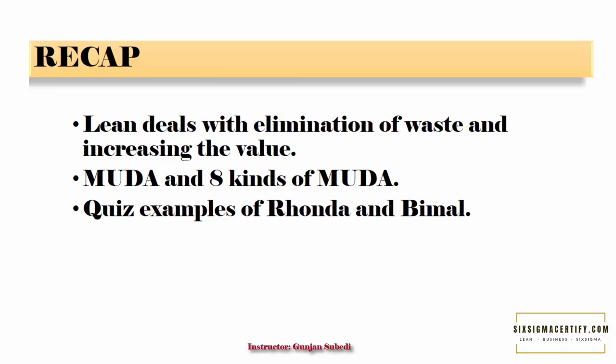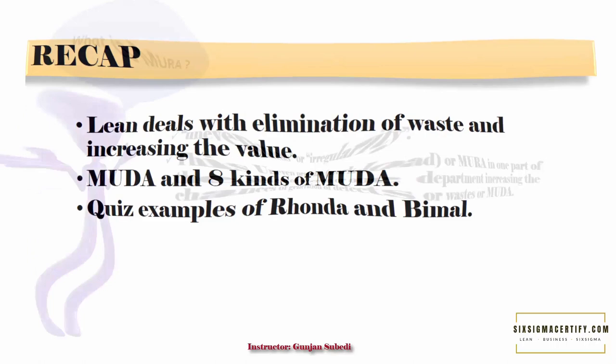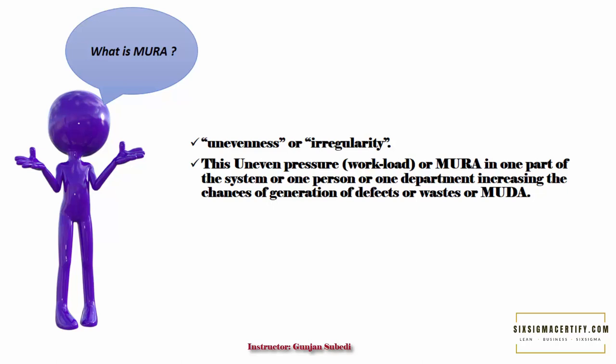In this lecture, we will study another important concept called Mura. So what is Mura? Mura simply means unevenness or irregularity. This could result in pressure building up in one part of the system, thus increasing the chances of generation of defects or waste, which is also called Muda.